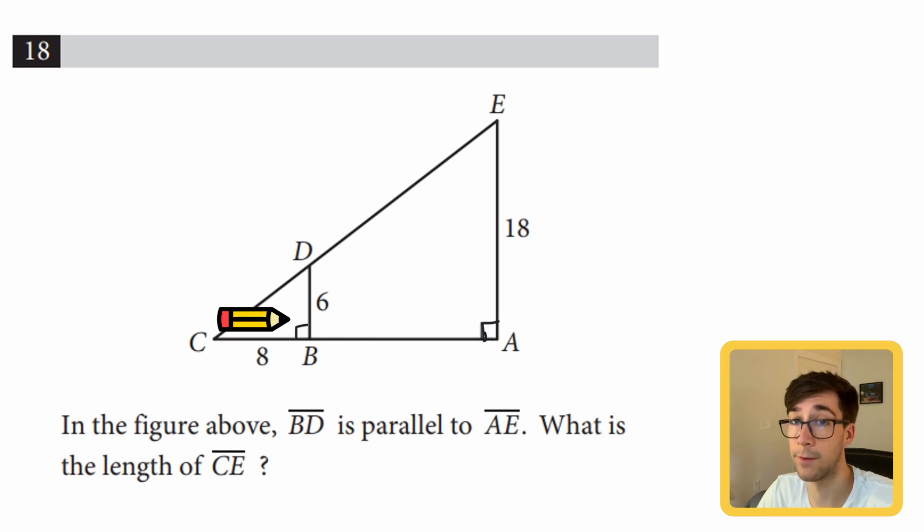That's one angle that's in common. What is the length of CE? In this problem, we have a small triangle in the bottom left and then a big triangle that's the whole triangle that also encapsulates that smaller triangle.